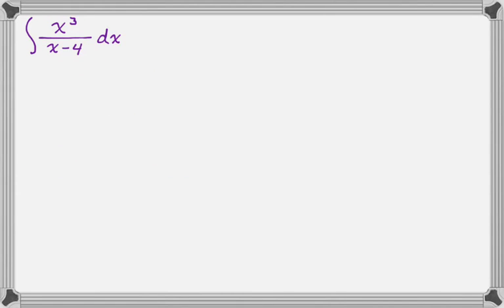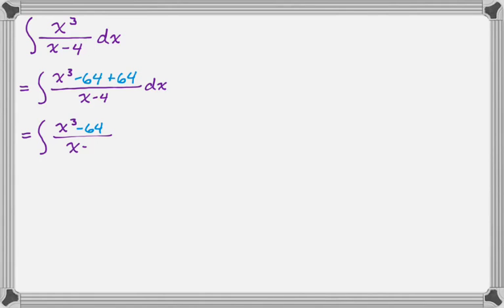So for example, if we have the integral of x cubed over x minus four dx, I look at that and I think x minus four is a factor of x cubed minus 64. You might not think of that, but if you do think of that, you can kind of use this trick again. So what I'm going to do is rewrite this as x cubed minus 64 plus 64, so those combined to zero. So we're changing the way it looks, but not actually what it is. And now I'm going to break this into two, integral of x cubed minus 64 over x minus four, and then plus 64 over x minus four, and then dx.